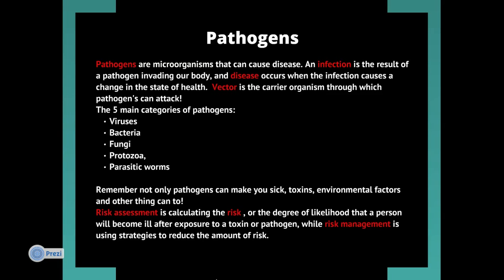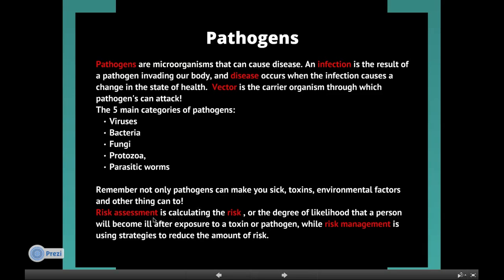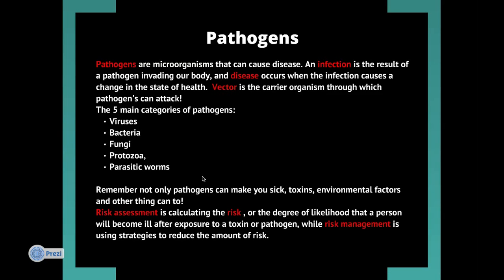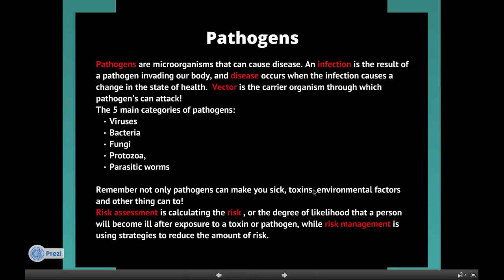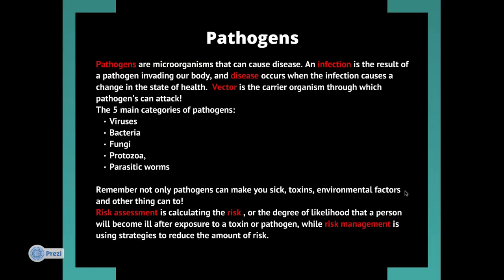These are the five main categories of pathogens — it's very important to remember these. Remember, not only pathogens can make you sick; toxins and environmental factors can definitely make you sick too. Risk assessment is calculating the risk, or the degree of likelihood, that a person will become ill after exposure to a toxin or pathogen. Risk management is using strategies to reduce the amount of risk.